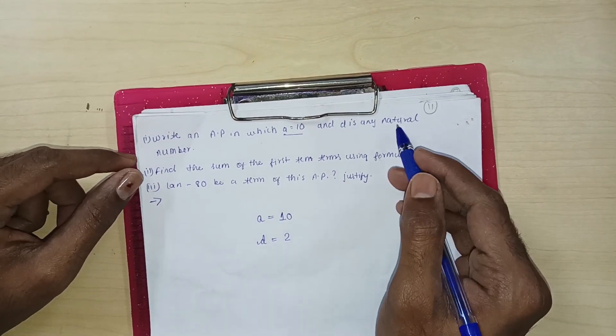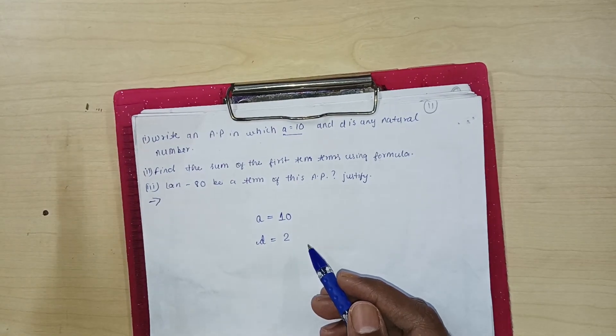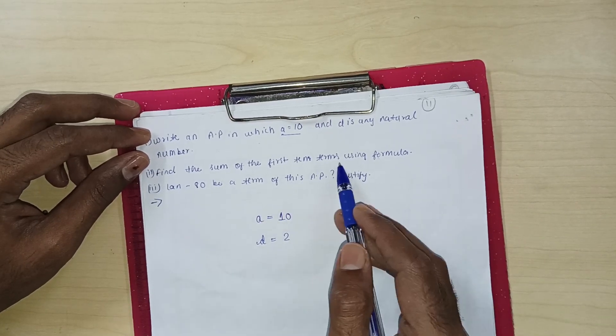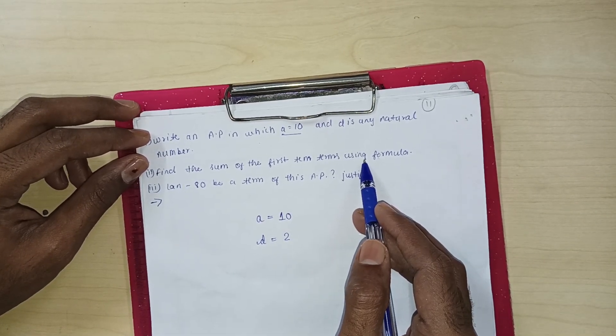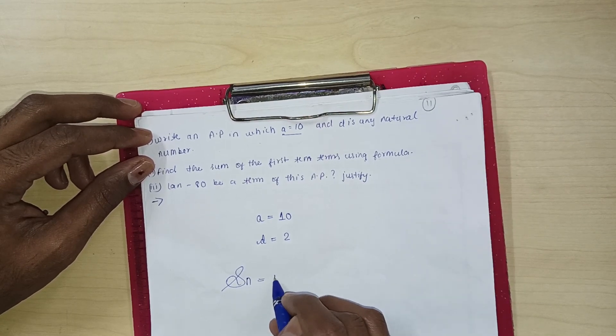And the natural number starts from 1. Because it's a whole, then you start from the whole. Understood? Find the sum of the first 10 terms using the formula.